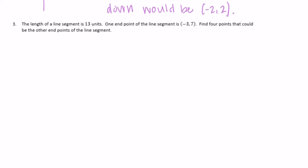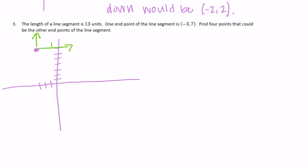Number three: the length of the line segment is 13 units. One endpoint of the line segment is (-3, 7). Find four points that could be the other endpoint of the line segment. I'm going to plot it so we can see it. This point is right here, and we want to find four points that are 13 units away. We can go in four different directions: right 13, up 13, left 13, and down 13.